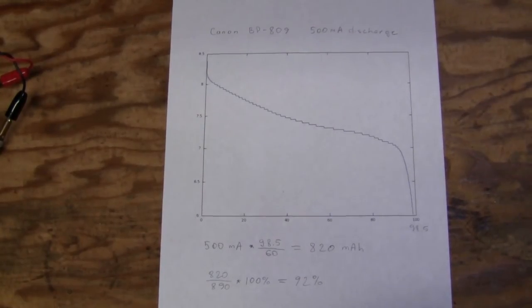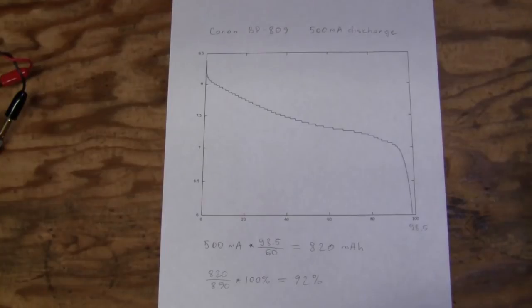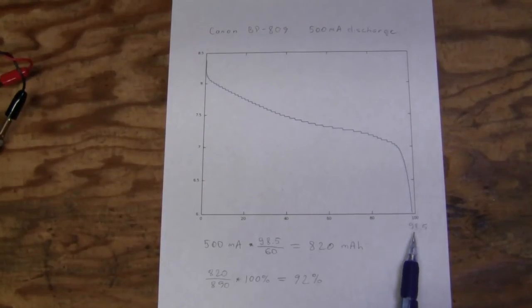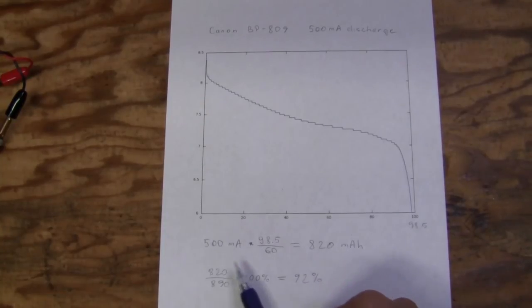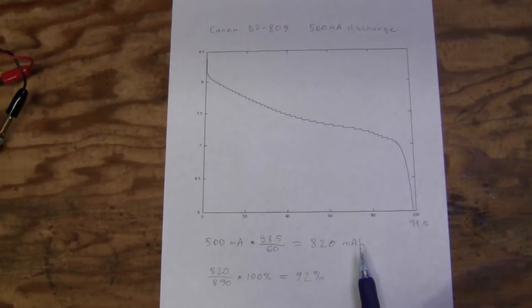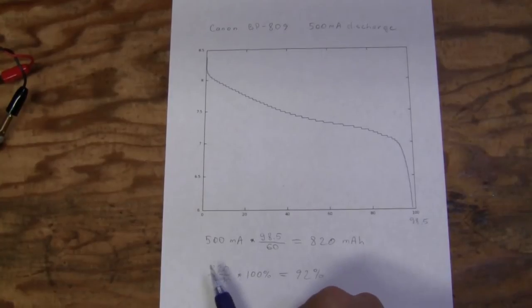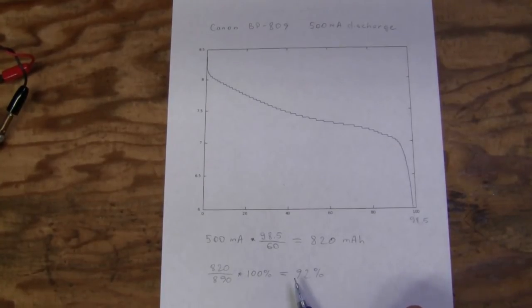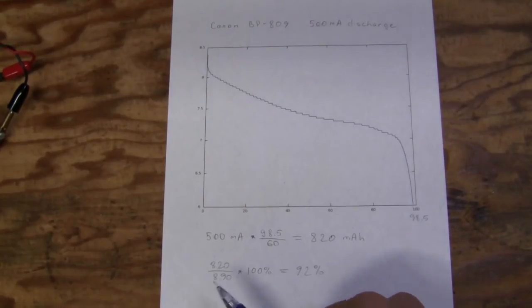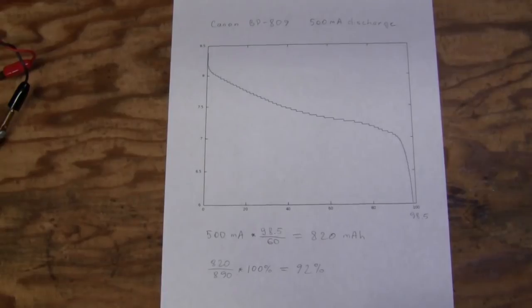So the discharging just finished and here is the result. I printed out the graph and it took 98.5 minutes, which with a little math translates to 820 mAh. And that in turn, with a little math translates to 92% of the rated 890 mAh capacity.